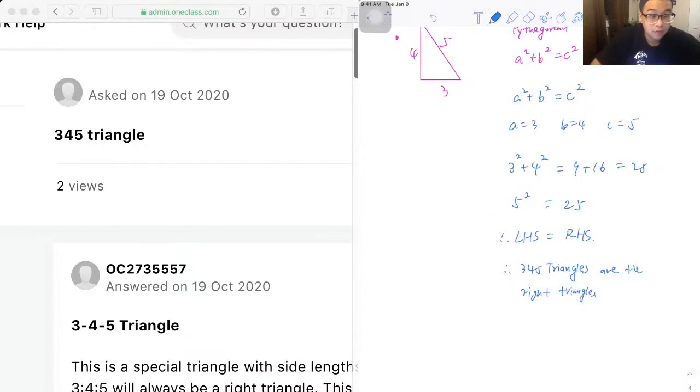And generally, triangles with sides 3x, 4x, and 5x are right triangles.